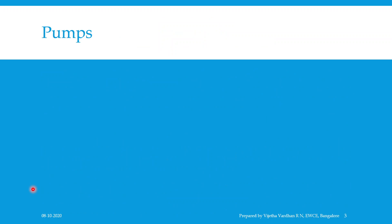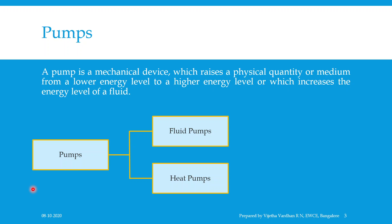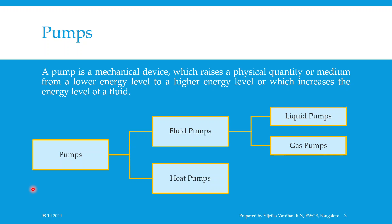Now, what is called a pump? A pump is a mechanical device which raises a physical quantity or a medium from a lower energy level to a higher energy level, or which increases the energy level of the fluid. The name of the pump depends on the medium being raised. Pumps are broadly classified as fluid pumps and heat pumps, and fluid pumps are further divided into liquid pumps and gas pumps. Heat pumps are not covered in this subject.